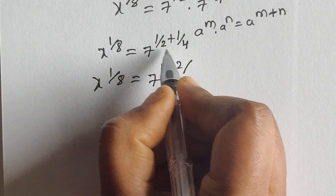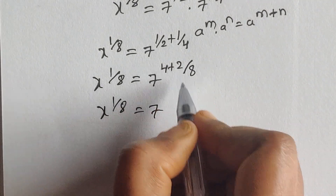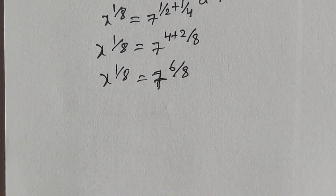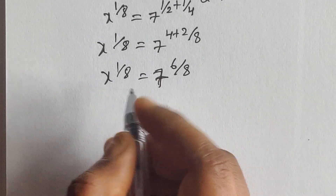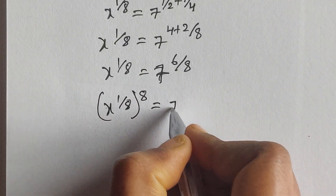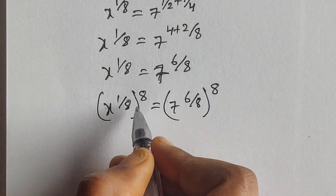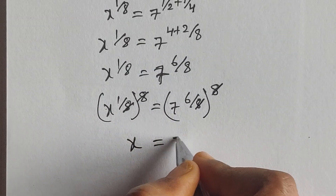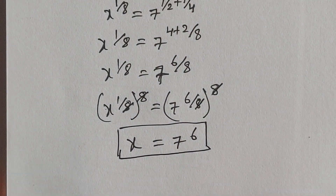So 1/2 plus 1/4 equals 4 plus 2 over 4, which equals 6/8. Now multiply both sides by 8 as a power: x to the power of 1/8, whole to the power of 8, equals 7 to the power of 6/8, whole to the power of 8. Here 8 and 8 get cancelled on the left, and 8 and 8 get cancelled on the right, giving x equals 7 to the power of 6.